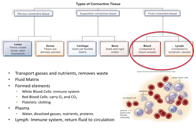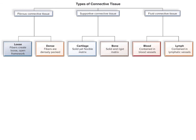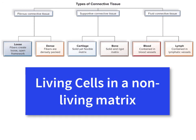Lymph houses the immune system and helps to return excess fluid from the tissues back to the circulation. You are responsible for understanding the different types of connective tissue as well as understanding that all connective tissue has the same characteristic of being living cells in a non-living matrix. That's it for today — see you in class.